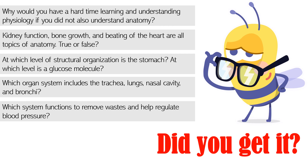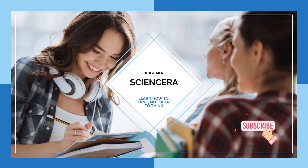The last question: Which system functions to remove waste and help regulate blood pressure? The urinary system — it rids the body of waste and helps regulate blood pressure. Thank you for watching. In the next lesson, we are going to discuss maintaining life and the language of anatomy, also from chapter one of Essentials of Human Anatomy and Physiology.